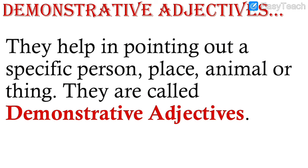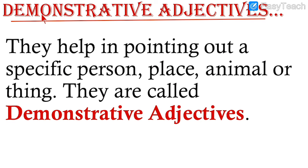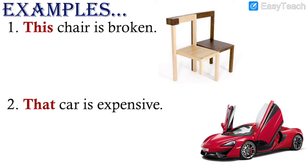Now let us learn about demonstrative adjectives. First, the spelling: D-E-M-O-N-S-T-R-A-T-I-V-E. Demonstrative adjectives help in pointing out a specific person, place, animal, or thing. They are used for pointing out — when you want to show 'this' or 'that.' When you want to point out something or someone, at that time you use demonstrative adjectives.